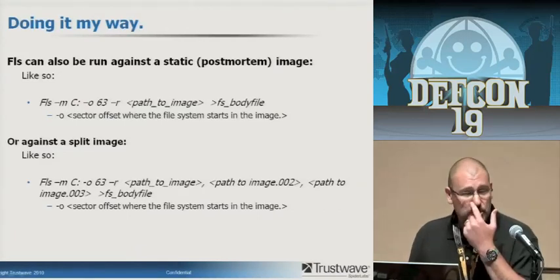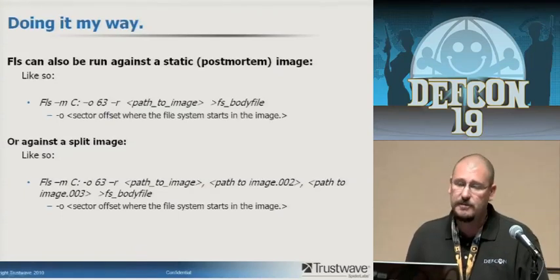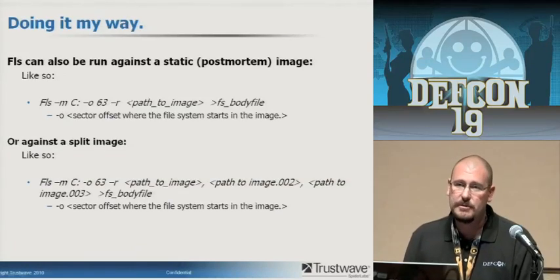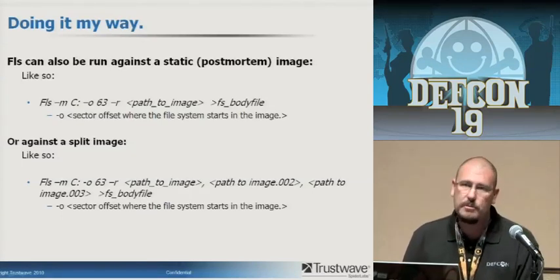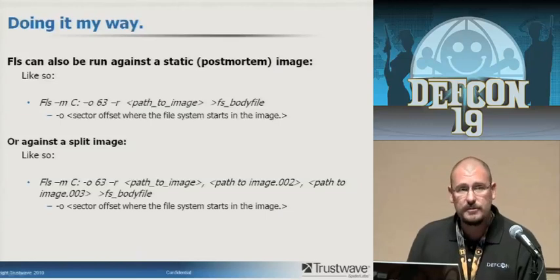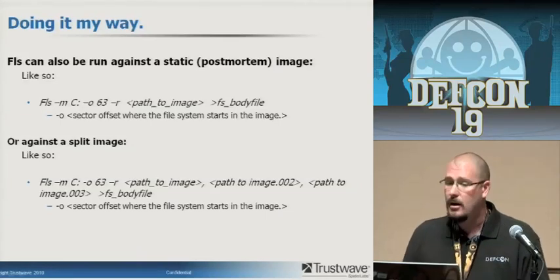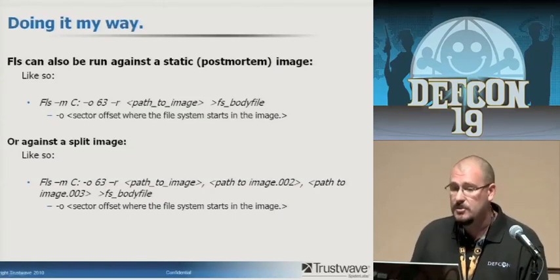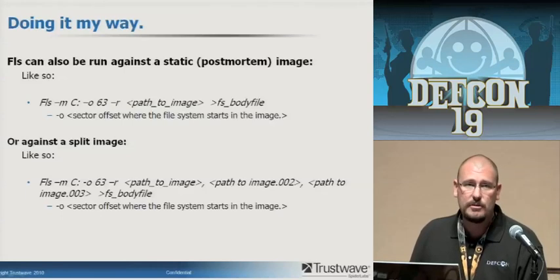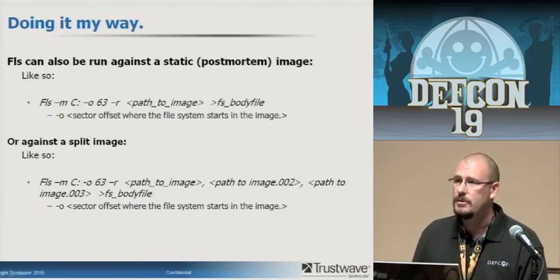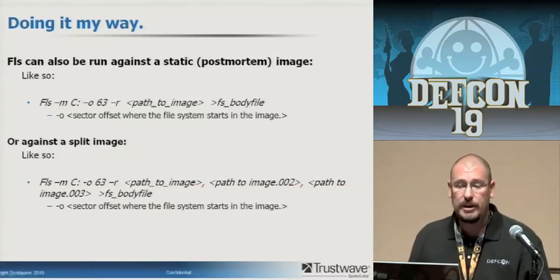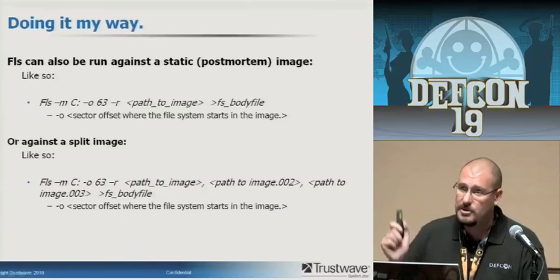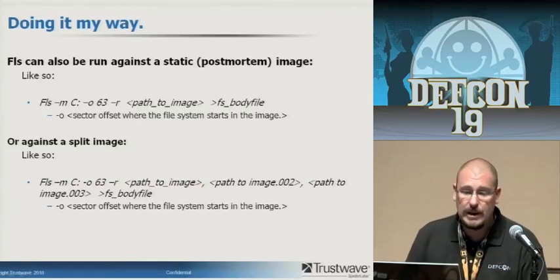For a static image: FLS -m, name your device, add the offset if needed, -r for recursive, then point it at wherever your image is sitting — that could be on a USB drive or local drive. Output it to the body file. The sector offset can be found with the MMLS tool, which is also free and part of the Sleuth Kit. You can also do this against a split image — you could have a hundred different .001, .002, .003 files; just list them space-separated and it works the same way.